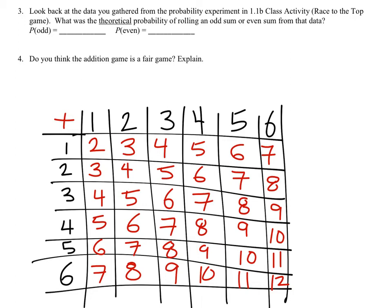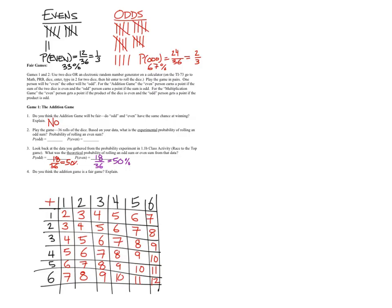Counting the odd sums: 1, 2, 3 ... 18 out of 36 are odd — that's 50%. Counting the even sums: also 18 out of 36, also 50%. So the theoretical probabilities are very different from our experimental results of 67% and 33%. The law of averages says the more we play, the closer we get to 50/50.